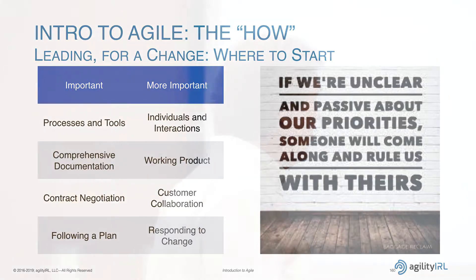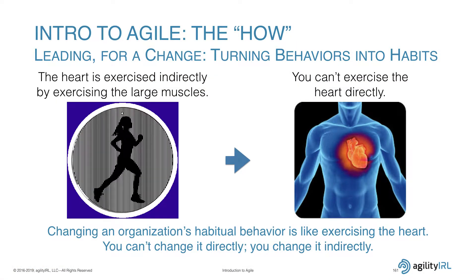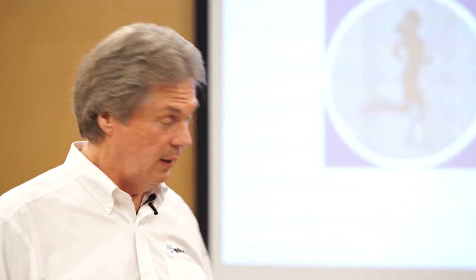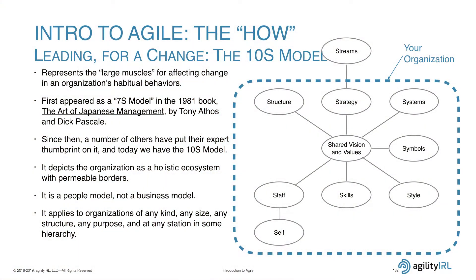You have to define the behaviors. Now, how do you turn those behaviors into habits? You cannot work on habits directly. It's like exercising the heart — you can't exercise the heart directly; you exercise the large muscles like running, which puts more demand on the heart. So what are the big muscles in a culture? What are the influences on behaviors to make them habitual?